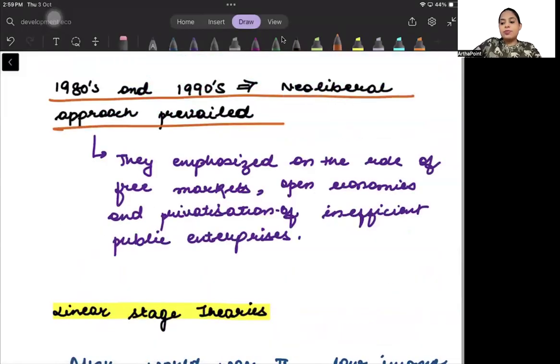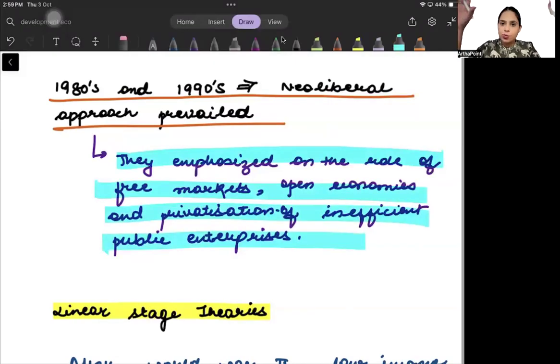In the 1980s and 1990s, the neo-liberal approach prevailed. This is the fourth approach. They emphasized the role of free markets, open economy, and privatization of public sector enterprises. Three things were focused on. The first was the role of the free market. We want to get our economies away from the government and focus more on demand and supply analysis. Open market - we don't want to work as a closed market. We want to go ahead and do globalization and privatization of inefficient public enterprises. If there are some government enterprises which are inefficient, we want to privatize them. That was the last approach, the neo-liberal approach. We will go ahead and look at all these different approaches.